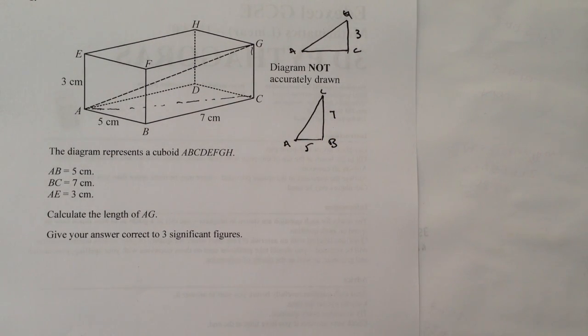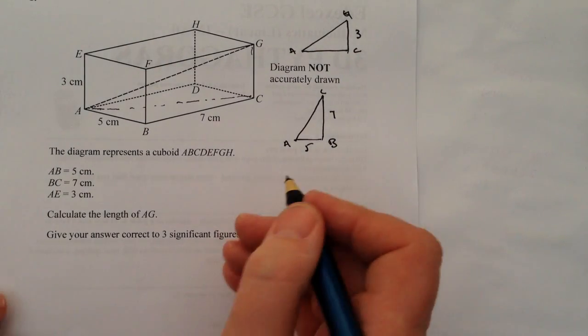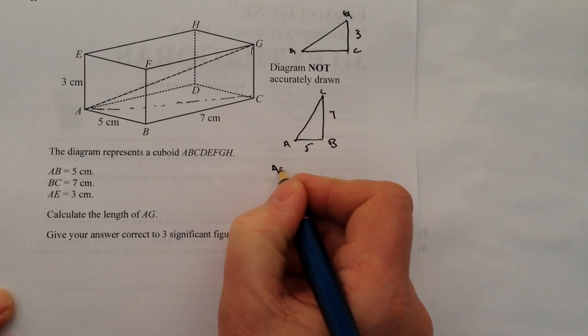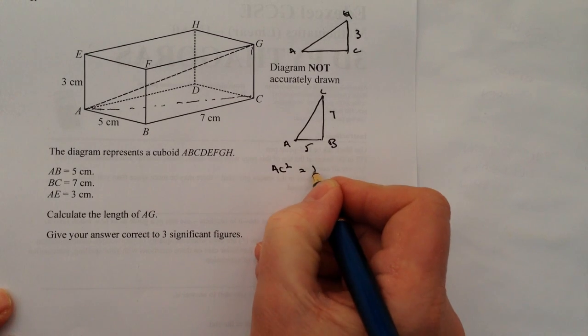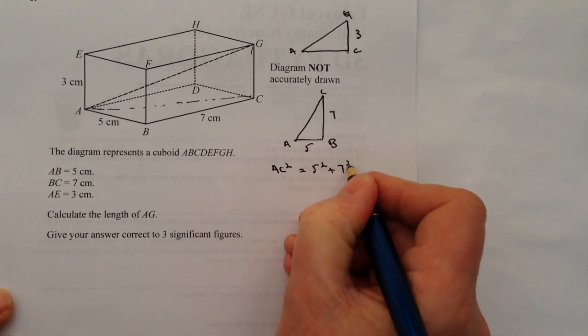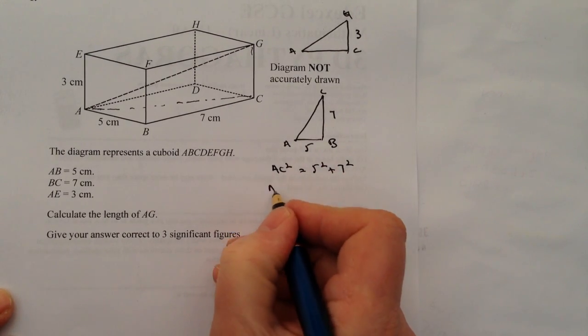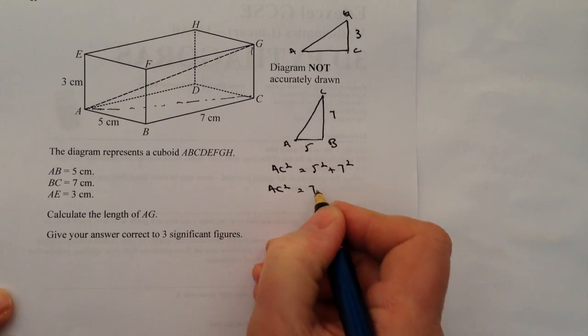It gives us the opportunity then to work out AC and then just simply plug that information into the top triangle that I'm using to calculate. So let's have a look at Pythagoras. We've got AC squared equals five squared plus seven squared. Well, that's going to give me AC squared equals 74.